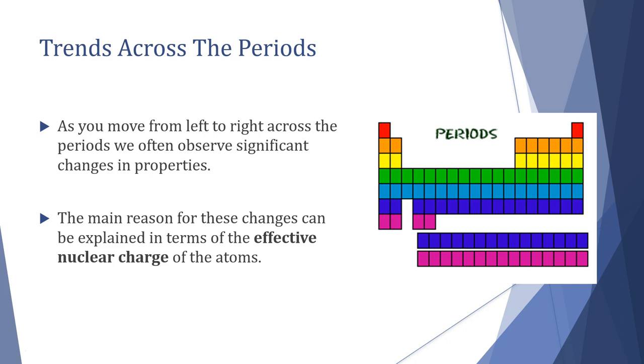Across the period as we move from left to right we observe a significant difference in properties but they do follow patterns. And the main reason is that we have changes in terms of effective nuclear charge. So I'm going to leave that here in terms of our structure of the periodic table - the next video will be on effective nuclear charge, how we calculate it and how we define it.